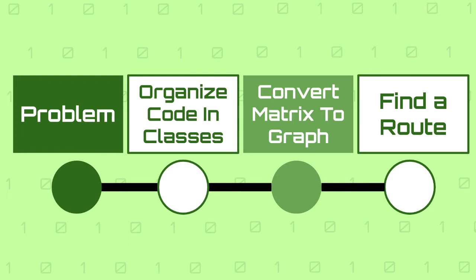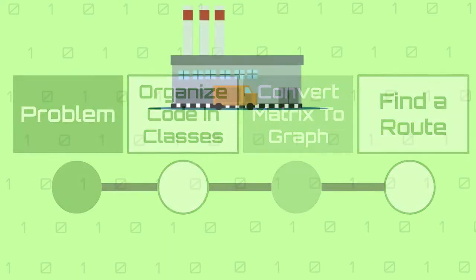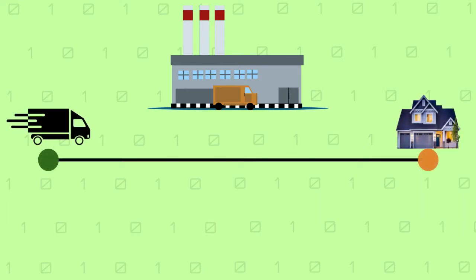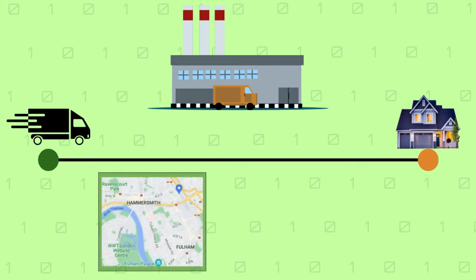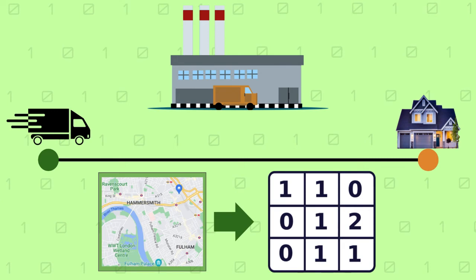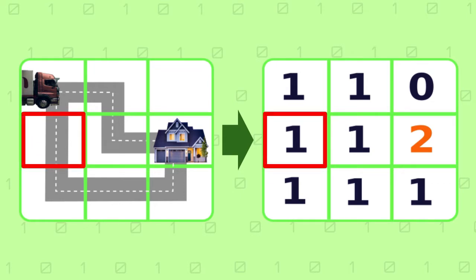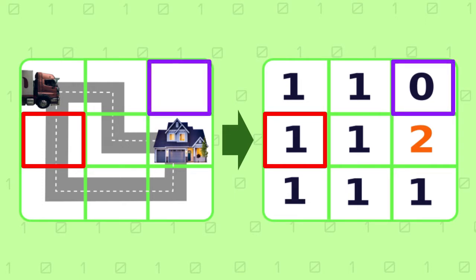So let's start by taking a closer look at the problem. Imagine a delivery service company that wants to create a system that will plan the route for a delivery truck to deliver a customer order. The planner system will create a delivery area for each order which is going to be represented as a matrix. Our job is to create an algorithm that will find a path for the truck to deliver the order. We are going to represent it as a matrix of integers where if the cell is 1 it means the area is accessible. If the cell is 0 it means it is not accessible, and if the cell is 2 it means the truck has reached its destination.